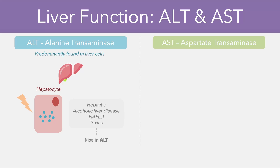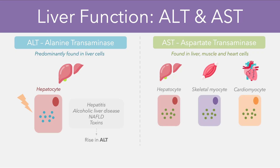In comparison, AST is found in the liver, the muscle, and the heart — so the hepatocytes, skeletal myocytes, and cardiomyocytes — so damage to any of these cell types will result in a rise in AST.